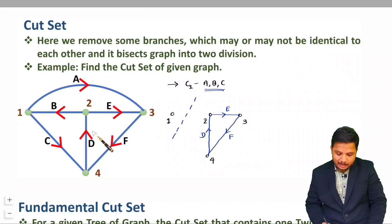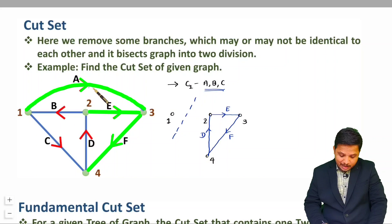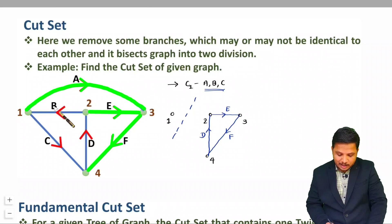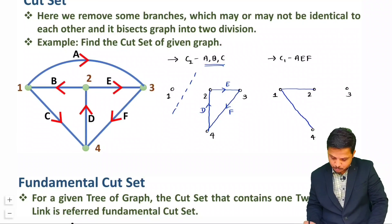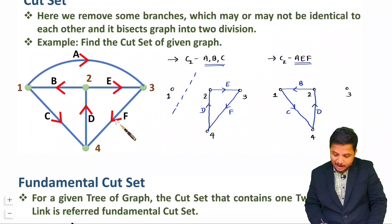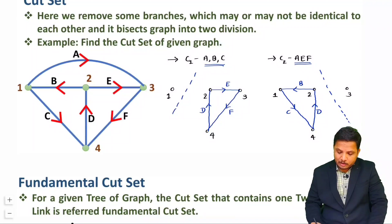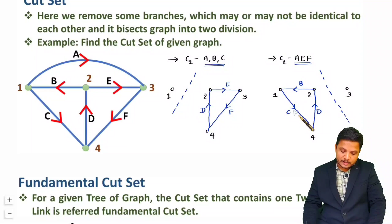There can be many examples with this graph. Let me give you one more example. If you remove branch A, E, and F, then node 3 will not be connected with the branches B, C, and D. So you can see node 3 becomes one part of the graph not connected with the other part. That is how you provide a cut set — you remove some branches and bisect the graph into two divisions.